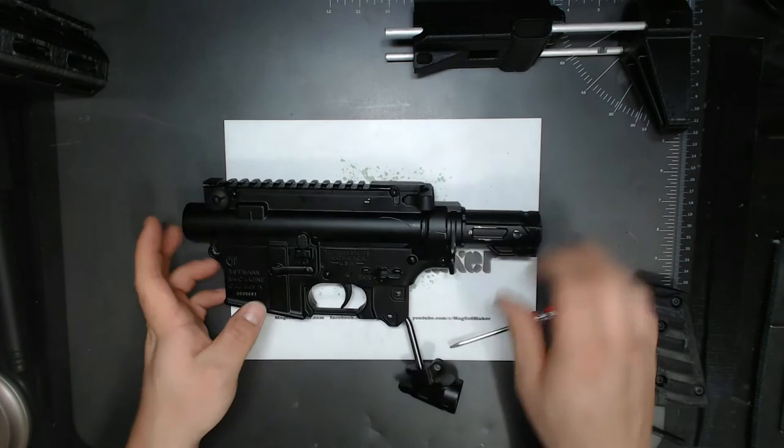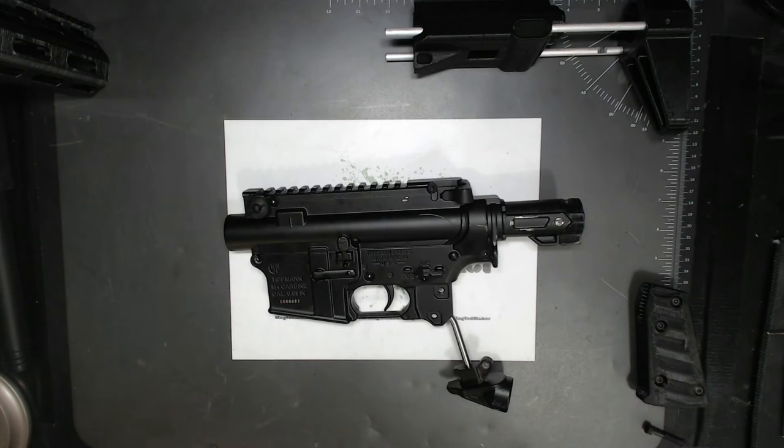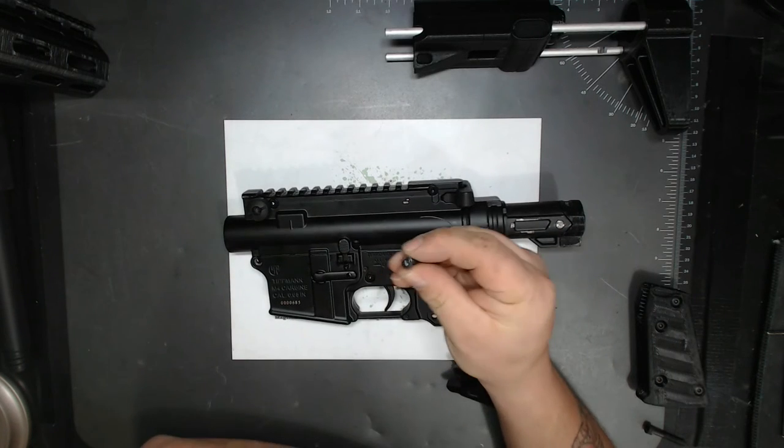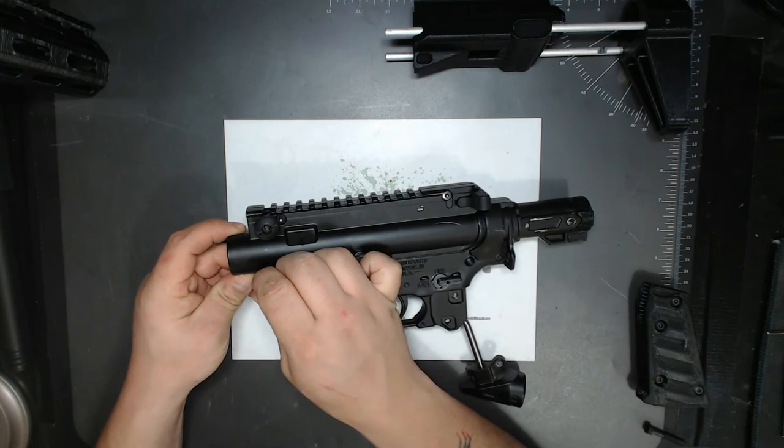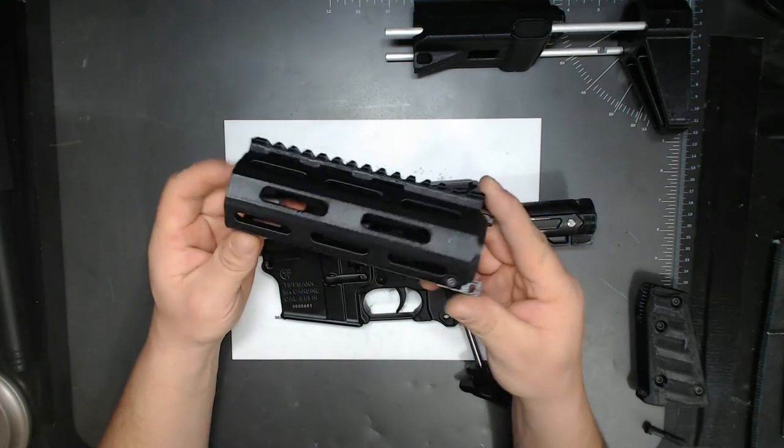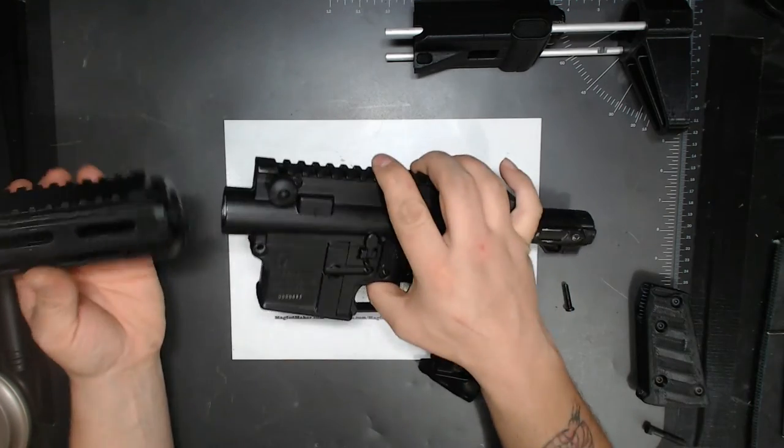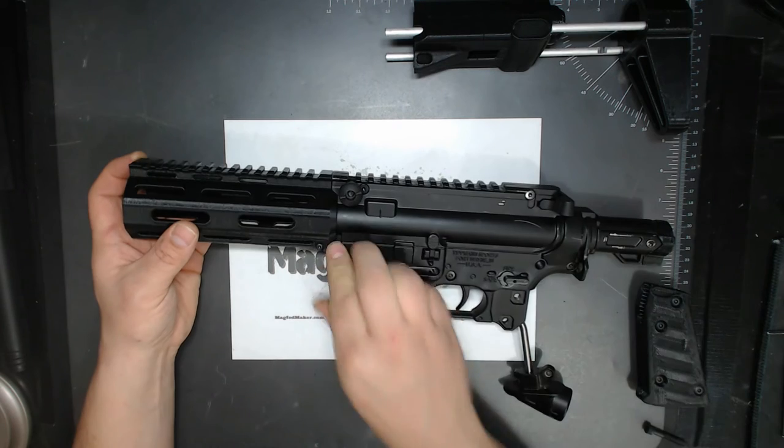Okay, so we'll get to the stock in a minute. I'd actually remove the pin. But this is the one bolt that secures the handguard to the receiver. Take that out. Take your Rattel handguard. Slide that on. Put your pin in.